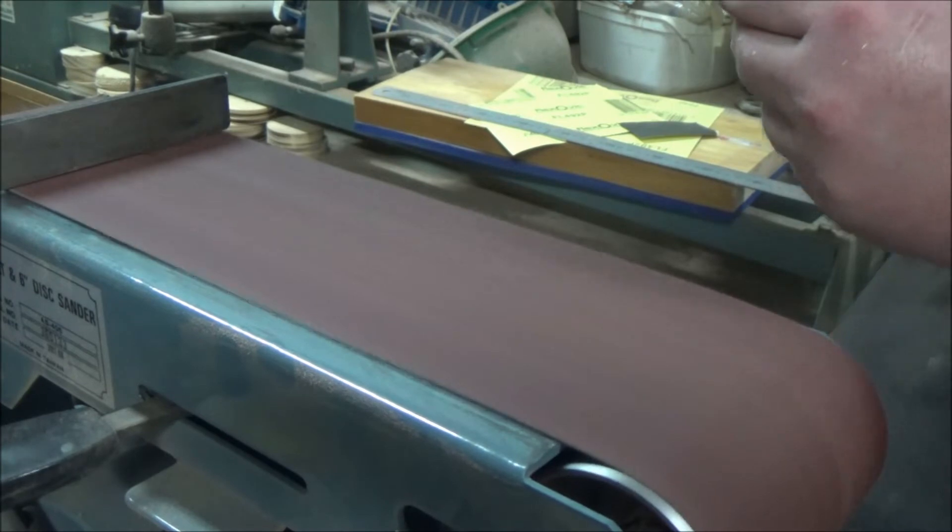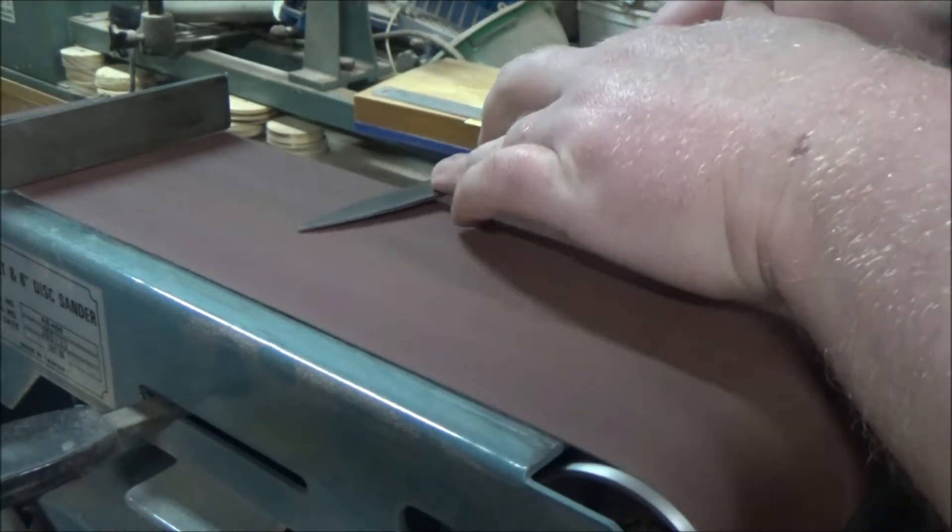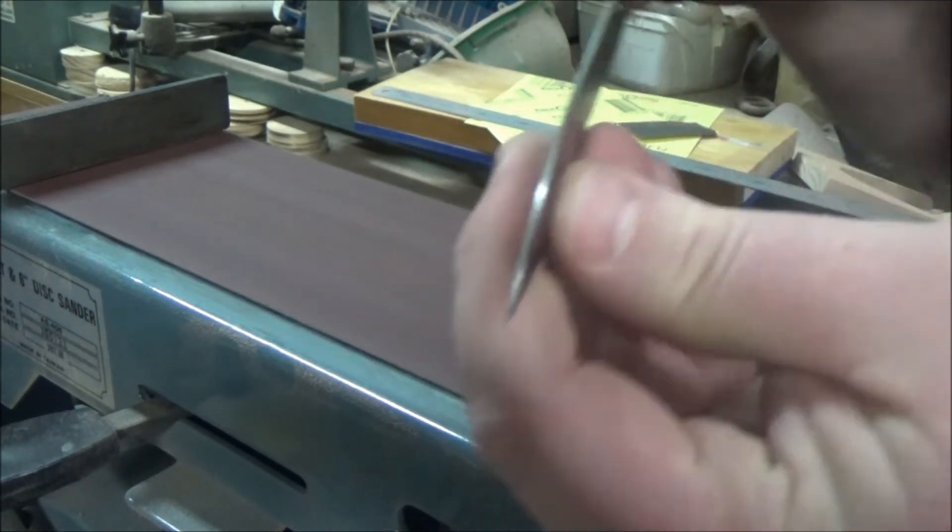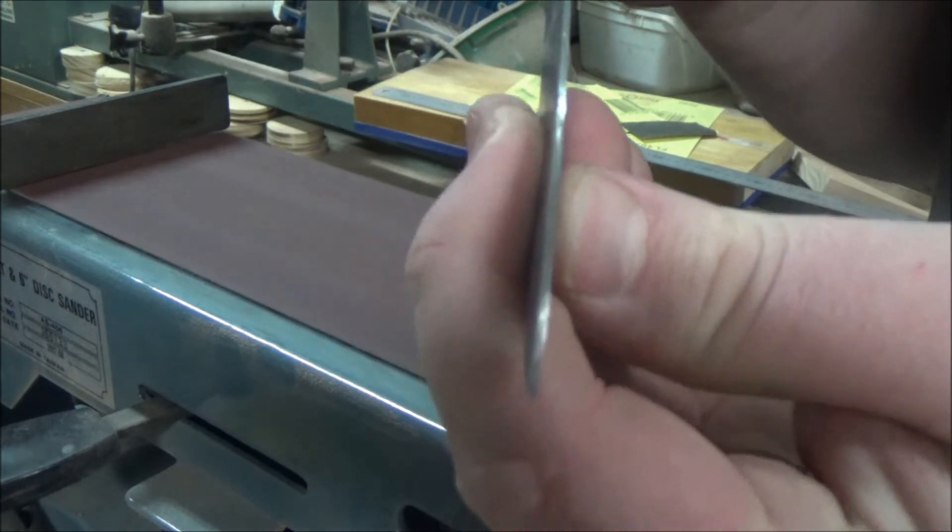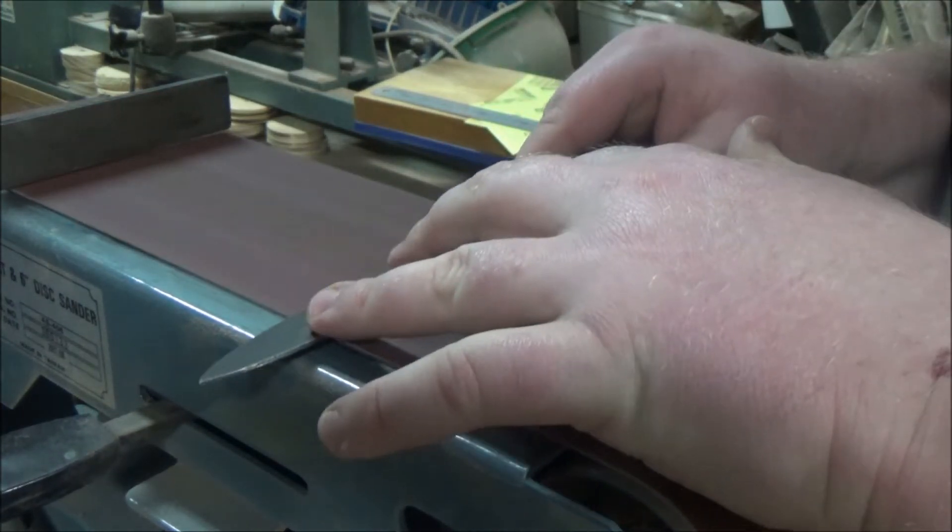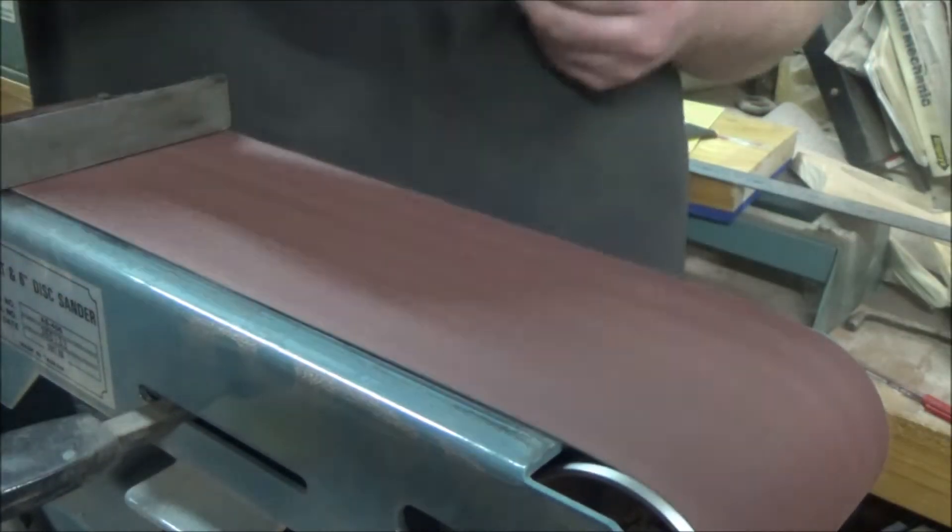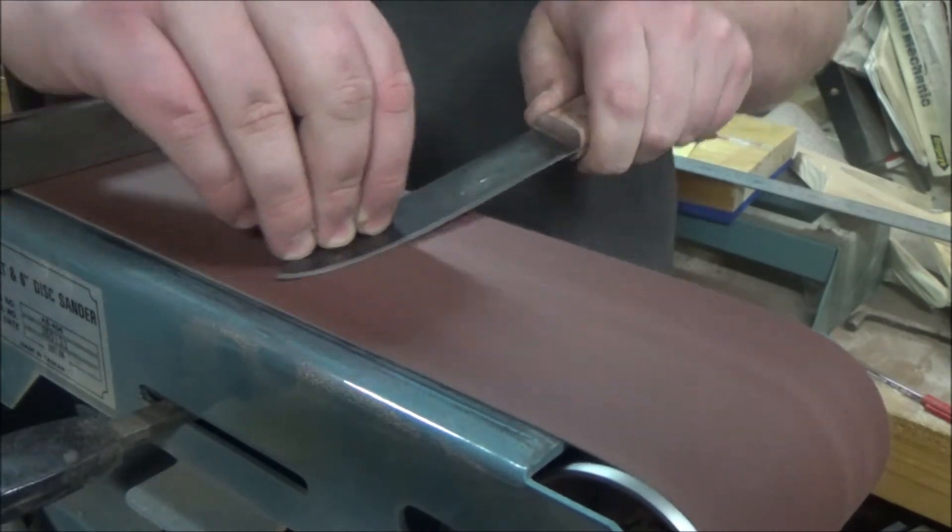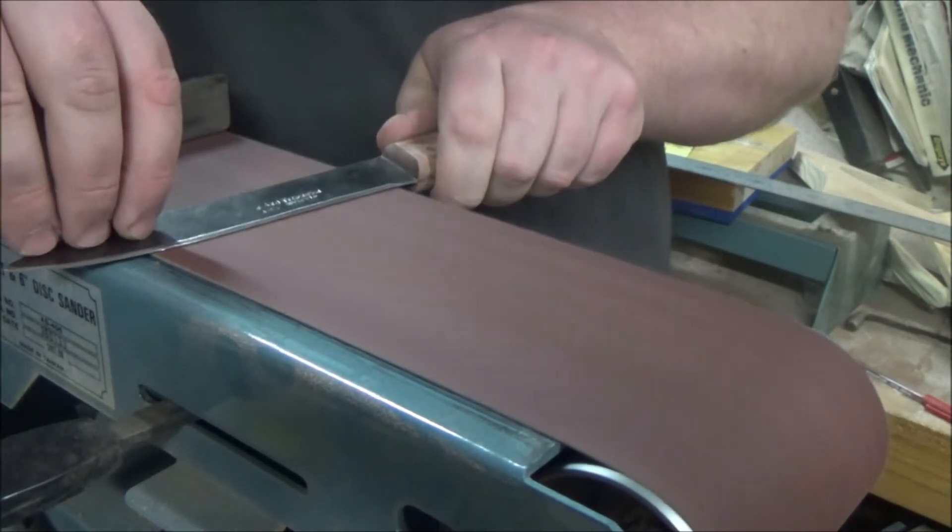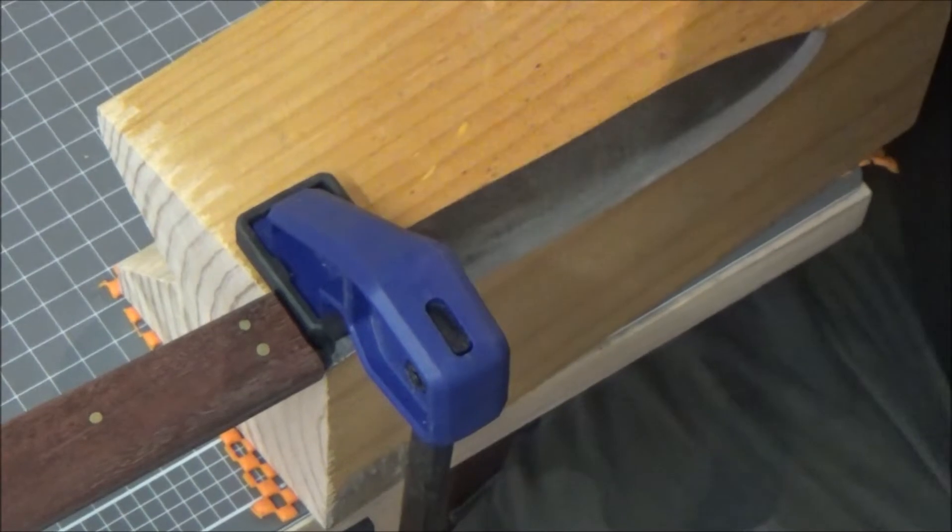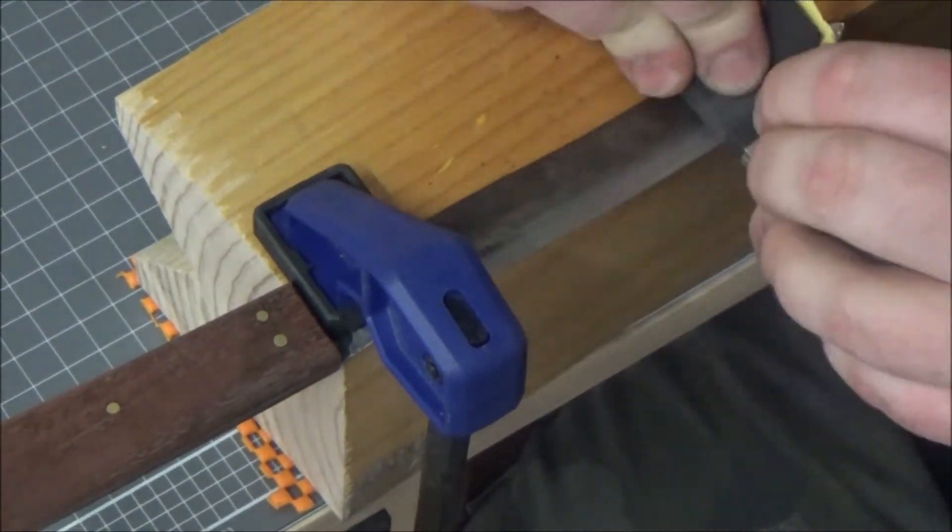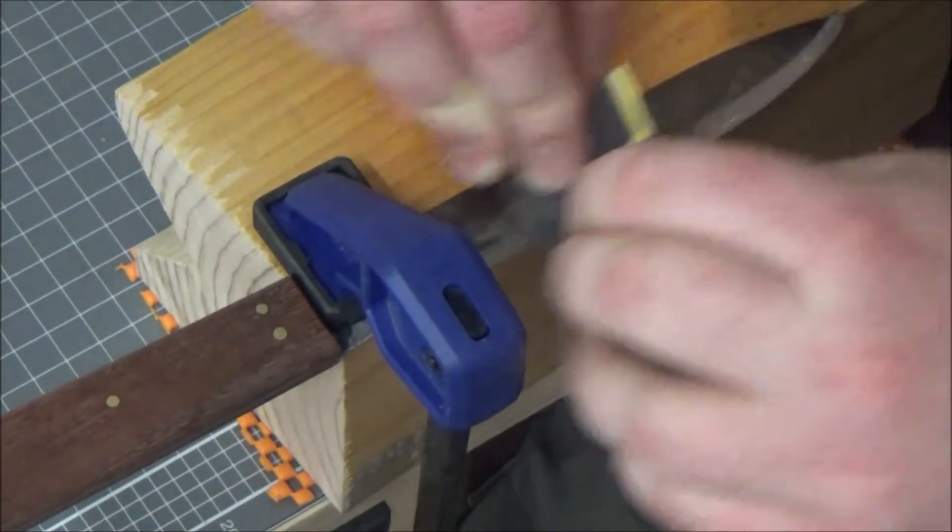And this is where I went a little wrong. I was planning on a Scandi grind, but for some reason I thought I could freehand it. I should have used a jig, so the grind ended up going a bit high, and it took out the word England and some of the logo, so I had to kind of roll with it and have a shallow sabre grind.